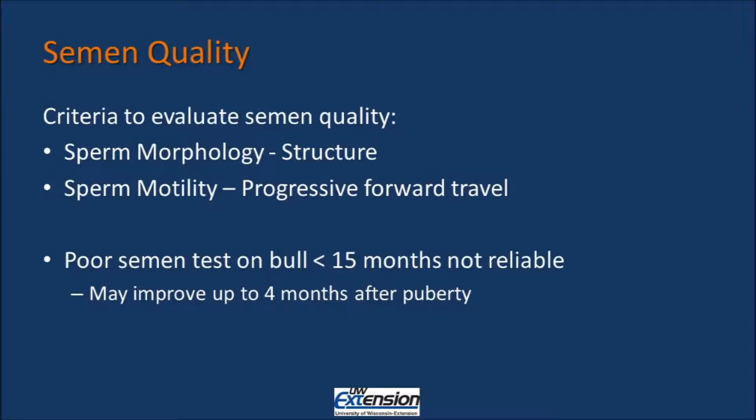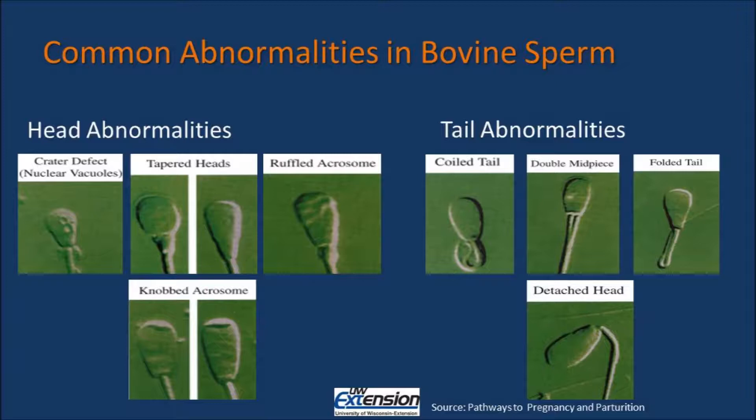It is not uncommon for poor sperm tests to occur in bulls less than 15 months of age. So you want to make sure that if you are testing a young bull and they fail the reproductive exam, that you continue to repeat tests for up to four months after puberty. This slide shows some common abnormalities in bovine sperm. You can see that the defects generally occur in the head or in the tail.